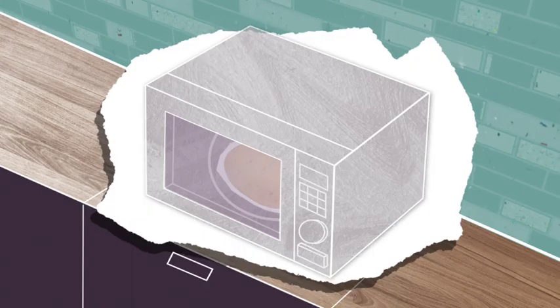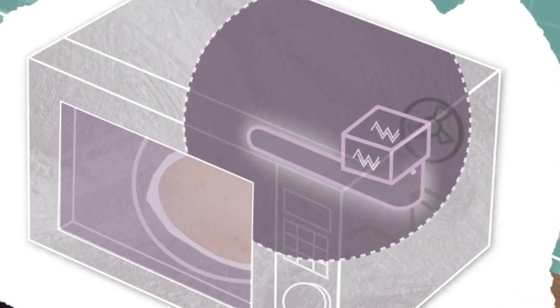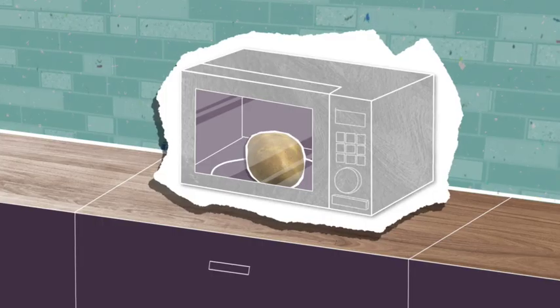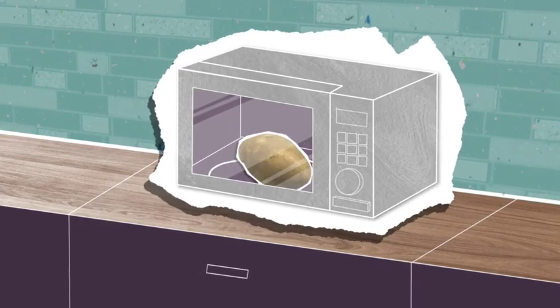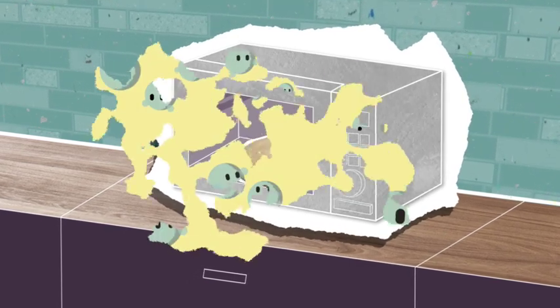When you press the start button on your microwave, electricity is converted into microwaves using a device called a magnetron. These microwaves then make their way into the cavity, where they bounce around and reflect off the walls and door. They can travel through some containers and find their way to the food itself. Once they reach it,